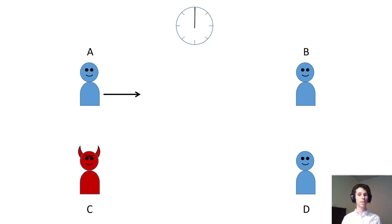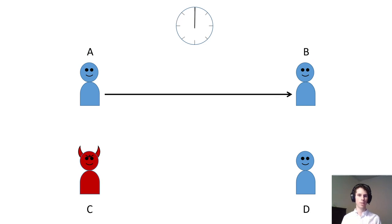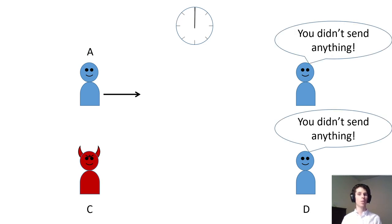A more realistic model is the asynchronous network model. In this model, there's no guarantee when a message will arrive, only that they will eventually arrive. As a consequence, it is impossible to distinguish between an adversarial party which never sent a message, and an honest party whose messages just haven't arrived yet.